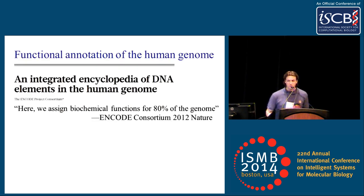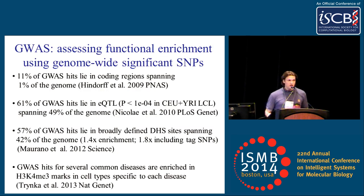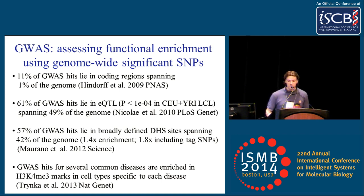Starting with a review of some recent work, everybody in this audience will be familiar with the landmark ENCODE 2012 paper, which was able to assign biochemical functions to 80% of the genome. A couple of recent perspective articles from Mudge et al. and Callis et al. have pointed out that there's still a lot of work to do because we still don't know what percentage of the genome is truly functional. The focus was initially on coding regions. Hindorff et al. showed that coding SNPs, while very enriched in genome-wide significant GWAS hits, only occupy about 11% of those SNPs — motivating a focus on non-coding variation.